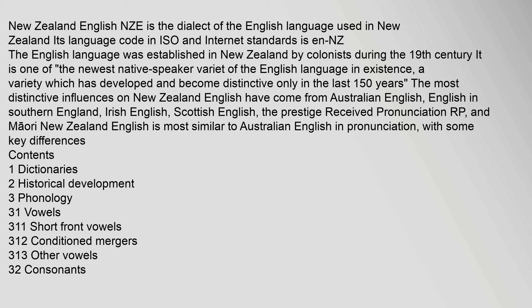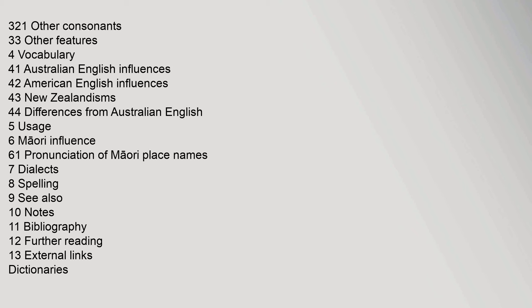Contents include: Dictionaries, Historical Development, Phonology (covering vowels, consonants, and other features), Vocabulary (including Australian English influences, American English influences, New Zealandisms, and differences from Australian English), Usage, Māori influences, Dialects, Spelling, and further references.